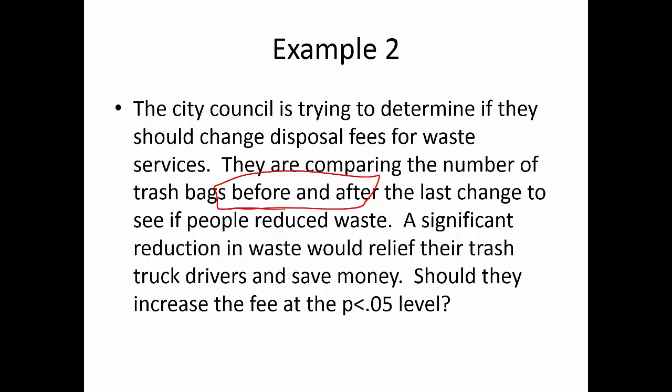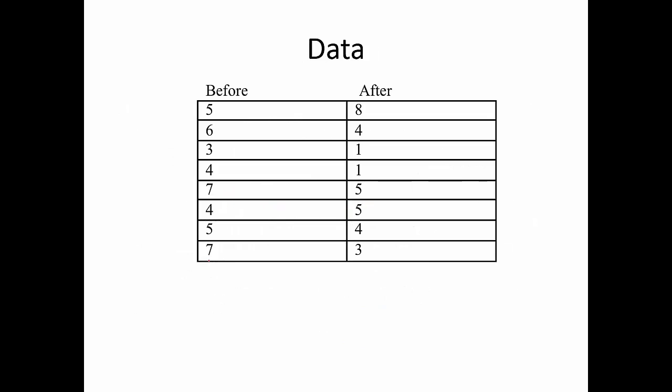A significant reduction in waste would relieve the trash truck drivers. Should they increase the fee at alpha = 0.05? They measured waste before the fee increase, increased the fee, and then measured after. Here's the data — each person gets their own row. There are eight lines, so N = 8. Even though you have 16 scores total, remember there are only eight people, each tested twice.